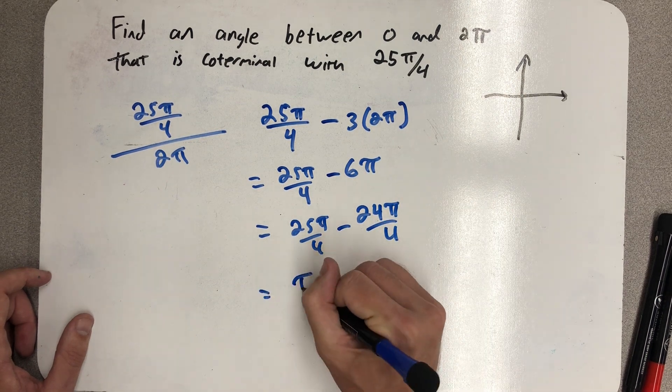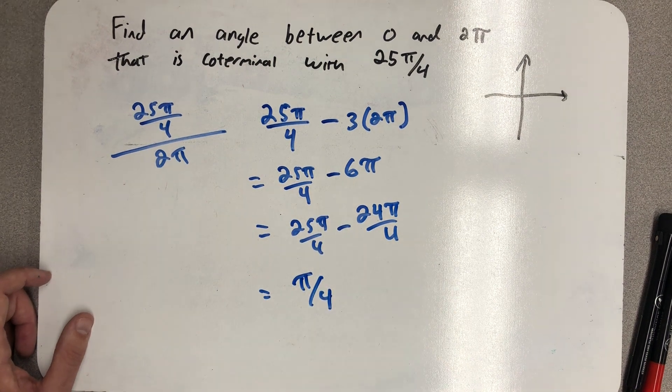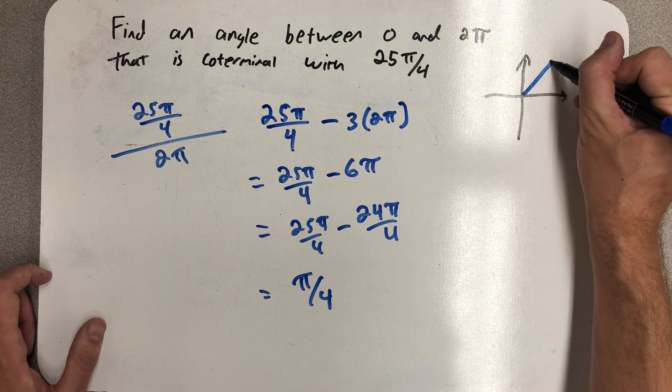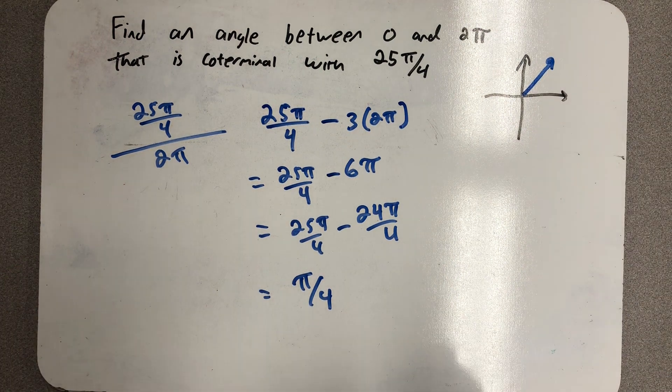And there's my nice, happy coterminal angle, π over 4. So there's my terminal side at π fourths.